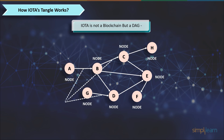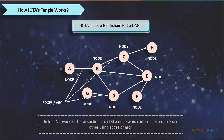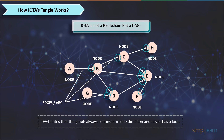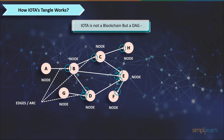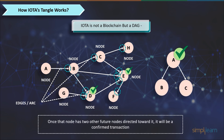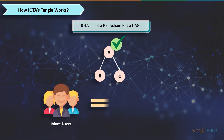In the IOTA network, each transaction is called a node, which are connected to each other using edges or arcs. 'Directed' states that the graph has a direction, and the 'acyclic' part states that the graph always continues in one direction and never has a loop. Now, each node will try to point to at least two other past nodes, but you can find up to eight. Once a node has two other future nodes directed toward it, it will be a confirmed transaction. And this whole network of nodes is called Tangle. The more people use IOTA, the faster it gets, because you have those two nodes pointing towards your transaction faster.